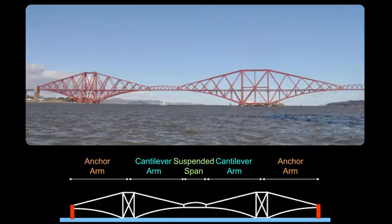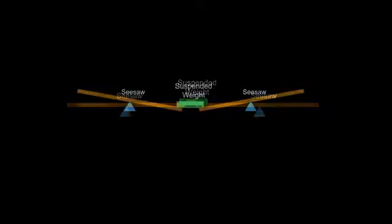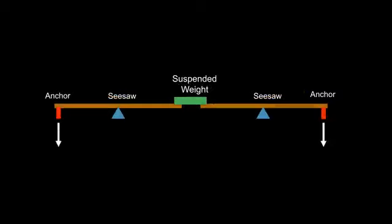The cantilever arm spans from the support towards the center. The back span is called the anchor arm — it anchors that center support towards the anchors at the end. And in the center, we have what we call a suspended span. We could think of this as essentially two seesaws. The seesaw has a center support representing the center tower of this bridge. If we suspend a weight between these two seesaws, we know that it's not going to be stable — the seesaw will tend to rotate and will no longer be horizontal. To make those seesaws horizontal again, the tips of them have to be pulled down, and that is what those anchors do.